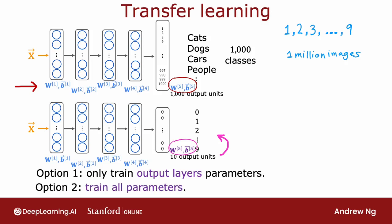Option two would be to train all the parameters in the network, including W1B1, W2B2 all the way through W5B5. But the first four layers' parameters would be initialized using the values that you had trained on top. If you have a very, very small training set, then option one might work a little bit better. But if you have a training set that's a little bit larger, then option two might work a little bit better.